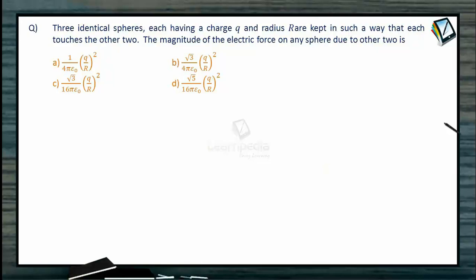There are three identical spheres, each having a charge Q and radius R, kept in such a way that each touches the other two. That means there are three identical spheres each having a charge Q and radius R arranged so that each touches the other two.